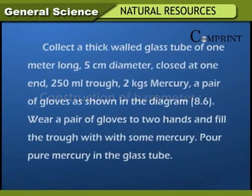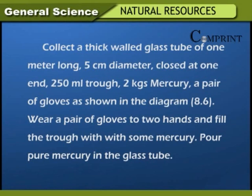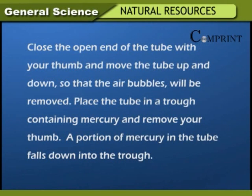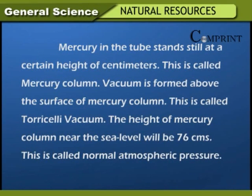Construction of a barometer: Collect a thick-walled glass tube of one meter long and 5 cm diameter closed at one end, a 250 ml trough, two cages of mercury, and a pair of gloves. Wear gloves and fill the trough with mercury. Pour pure mercury into the glass tube, close the open end with your thumb, and move the tube up and down to remove air bubbles. Place the tube in the trough containing mercury and remove your thumb. A portion of mercury falls down into the trough, and mercury in the tube stands still at a certain height — this is called the mercury column. Vacuum is formed above the mercury column, called Torricelli's vacuum. The height of the mercury column near sea level is 76 centimeters, called normal atmospheric pressure.